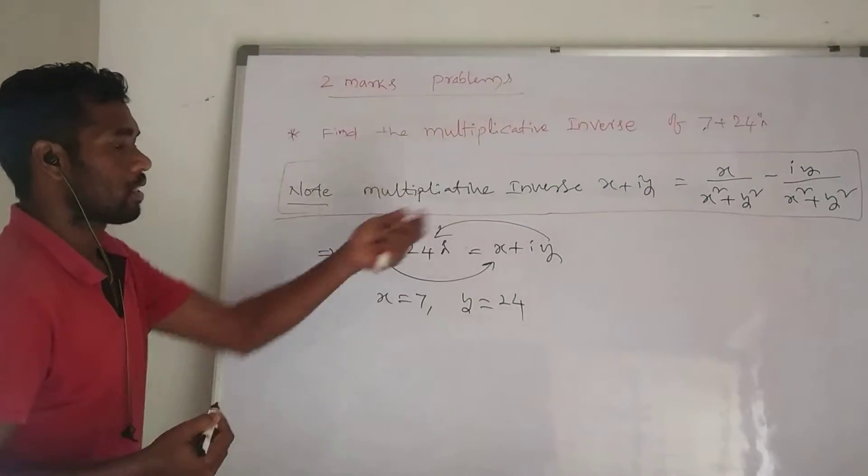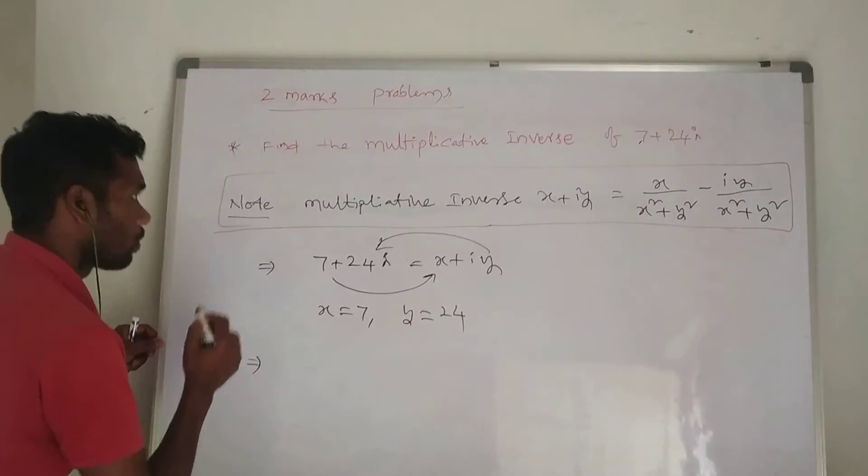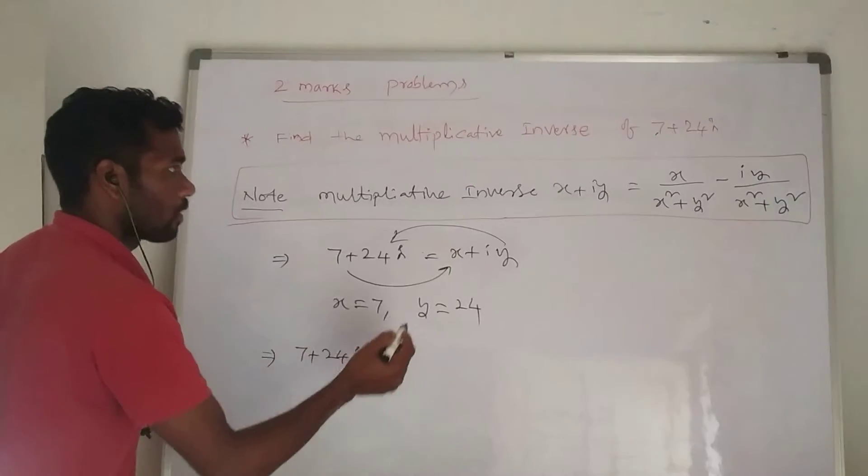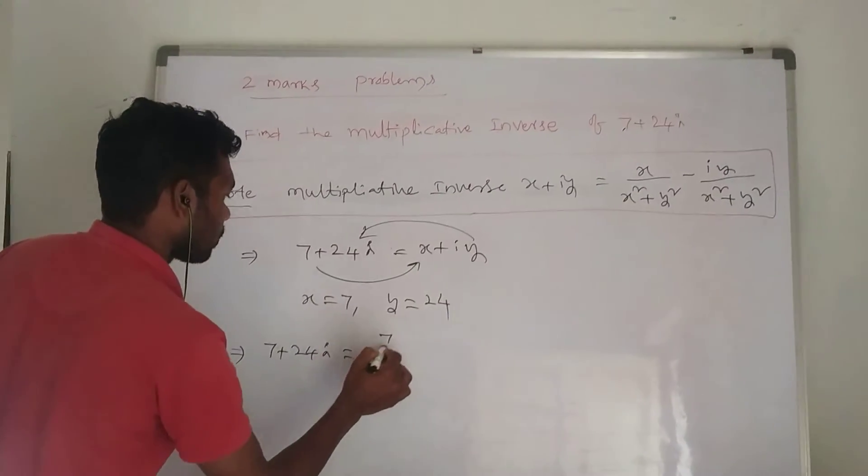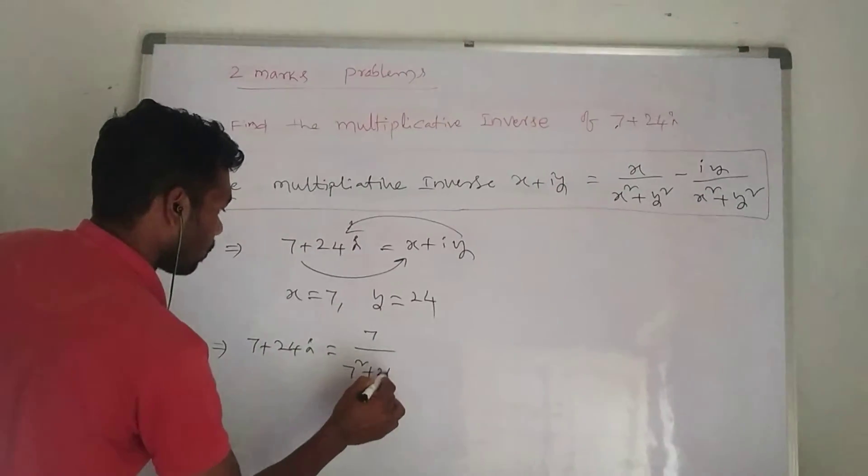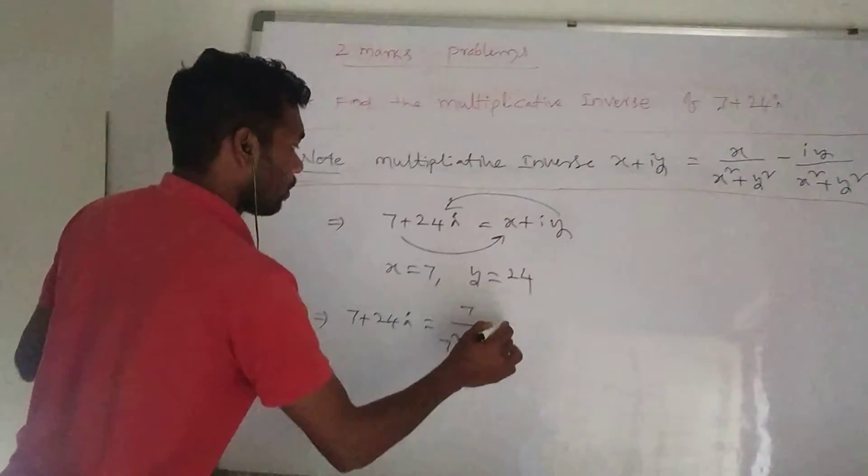So substitute into the multiplicative inverse. 7 plus 24i equals... What is the formula? x, which is 7, divided by 7 squared plus 24 squared, minus...